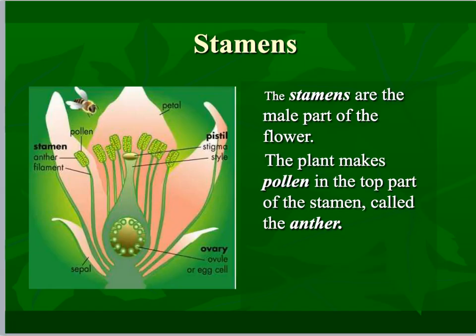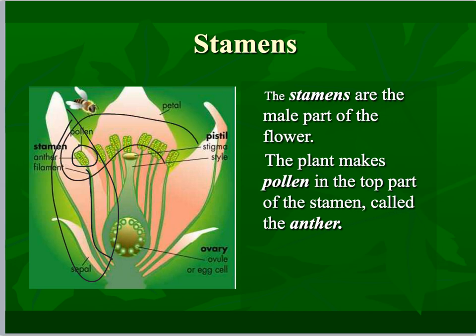The stamens are the male part of the flower. When we talk about the stamen, it is this whole region here. An individual pollen grain would be like a little dot on there. This is the anther, and the filament is the stalk on which the anther actually sits. In this particular plant, we see a lot of male anthers.